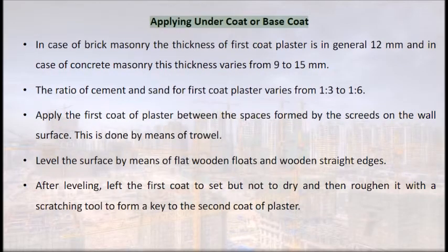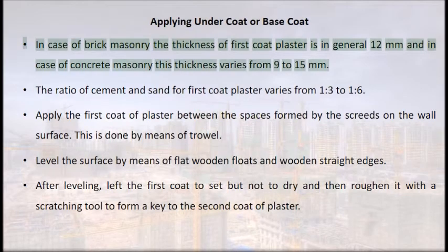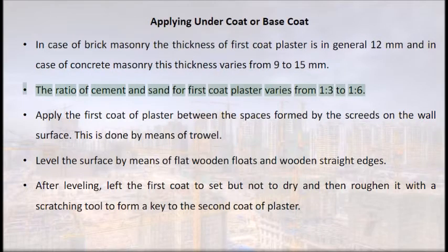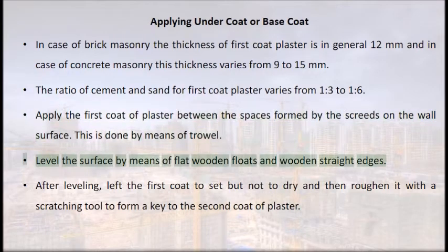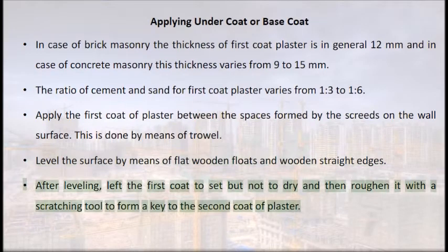Applying undercoat or basecoat: for brick masonry, the first coat is generally 12 mm thick; for concrete masonry, 9 to 15 mm. The ratio of cement and sand for first coat varies from 1:3 to 1:6. Apply the first coat between the screeds using a trowel, then level with flat wooden floats and straight edges. After leveling, allow the first coat to set but not dry, then roughen it with a scratching tool to form a key for the second coat.